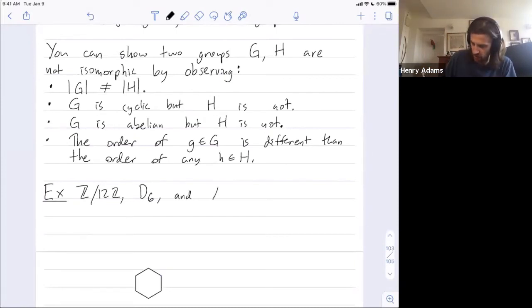And A4, this is the alternating group for permutations from four elements to itself. These all have size 12. The numbers from 0 up to 11, that's 12 different numbers. D6 has six rotations and six flips. A4 - so S4, all permutations from a set of size 4 to itself, has four factorial elements. Four factorial is 24, so A4, the even permutations, is half that, which is 12.